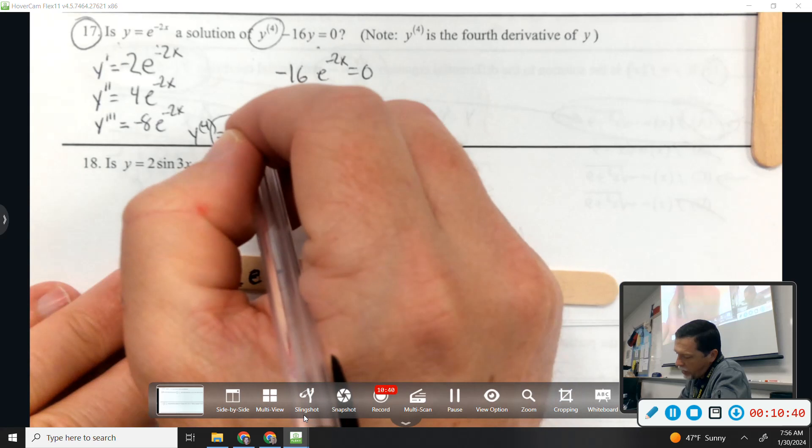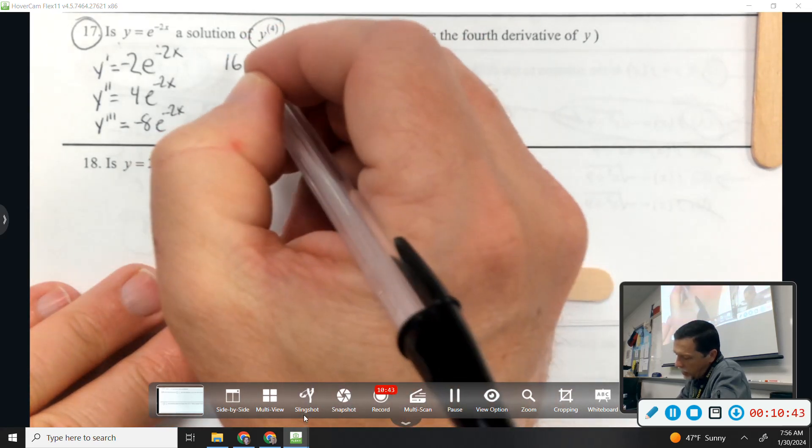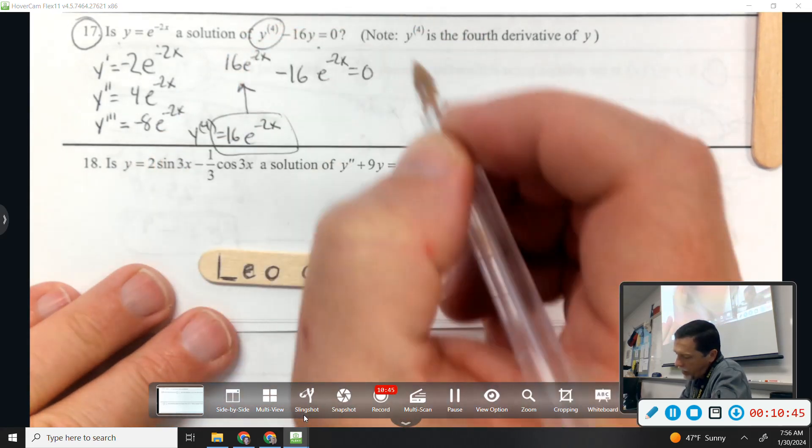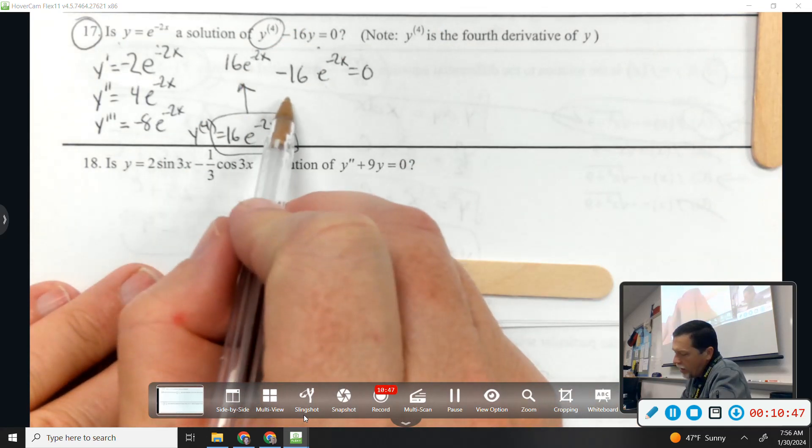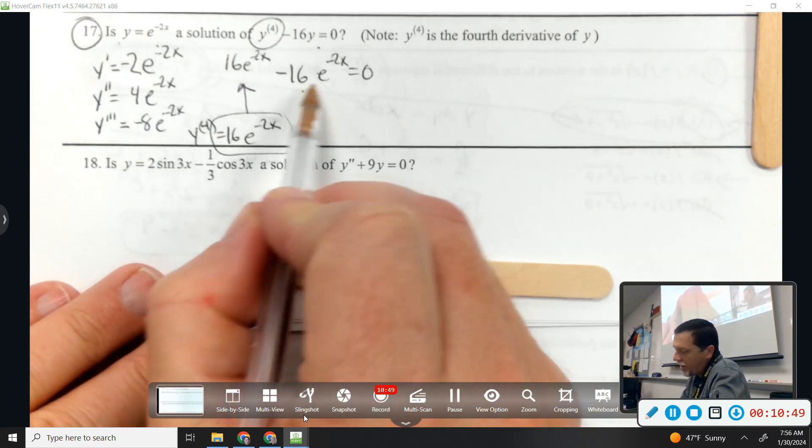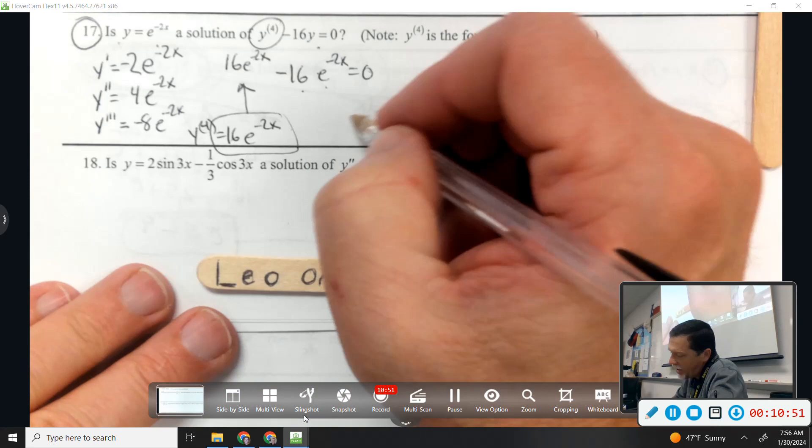Negative 16e to the negative 2x minus 16e to the negative 2x equals 0. So yes, that is true.